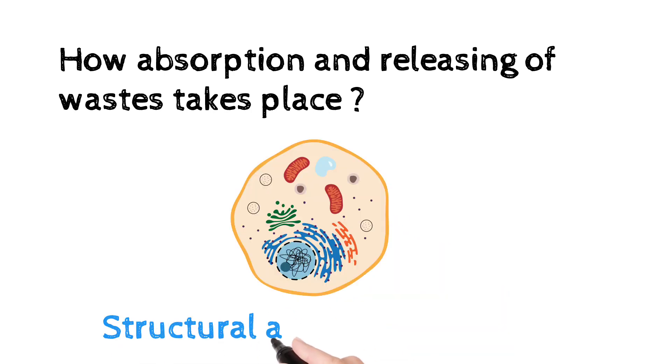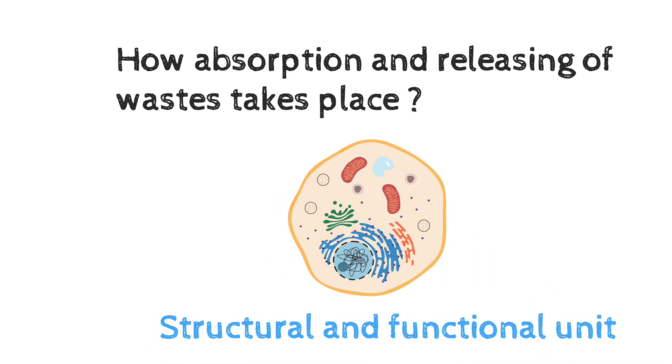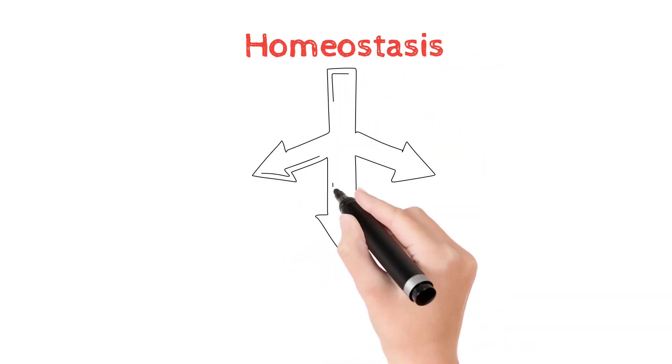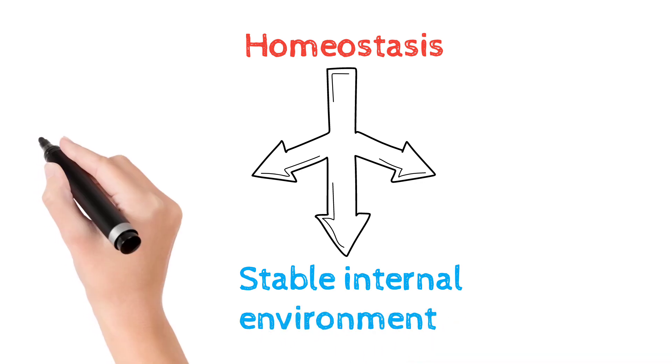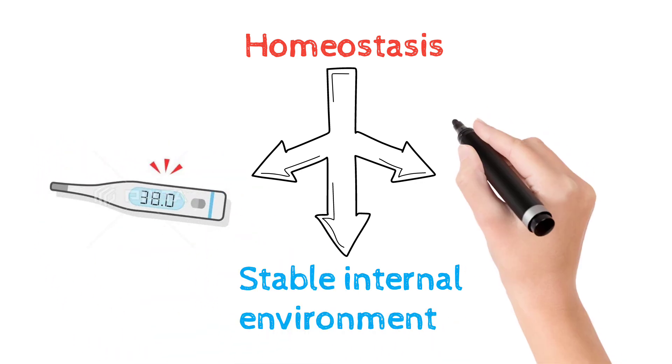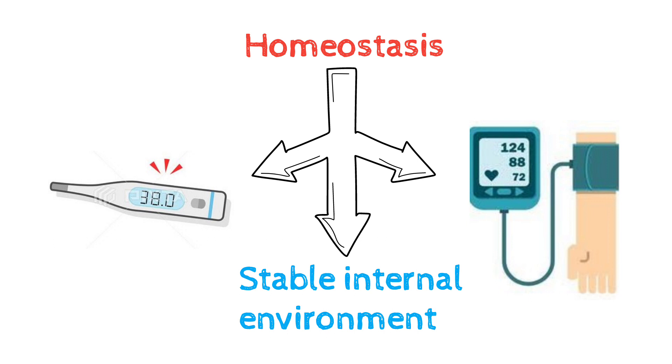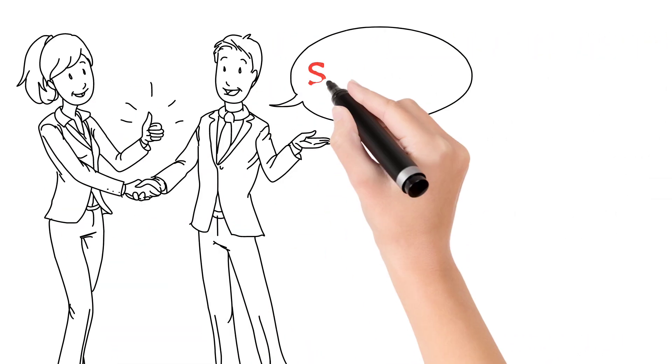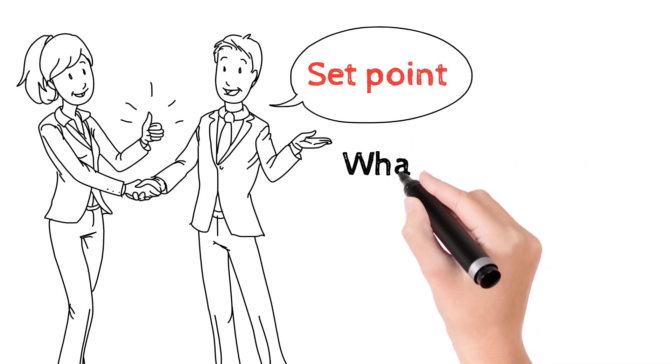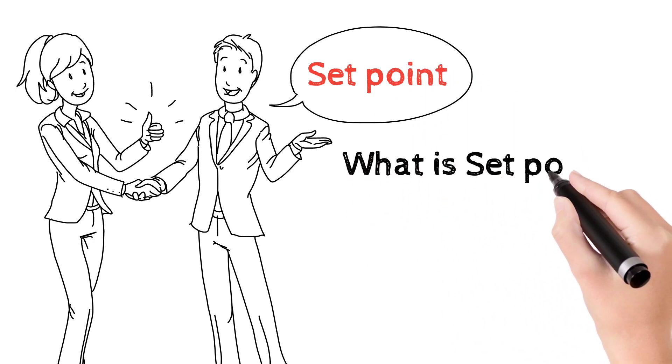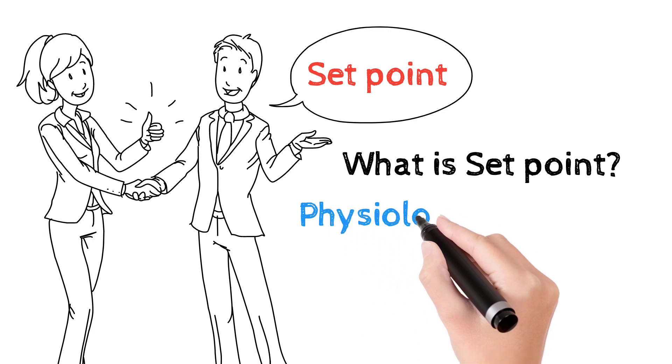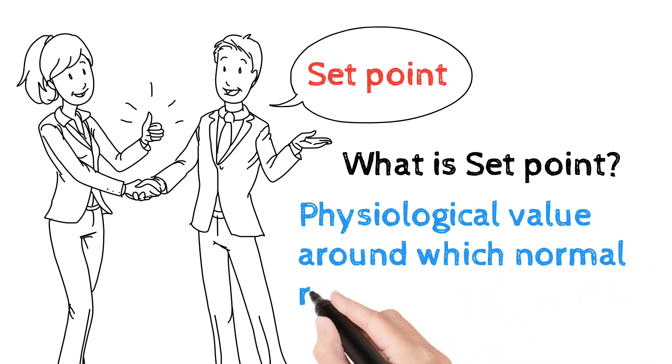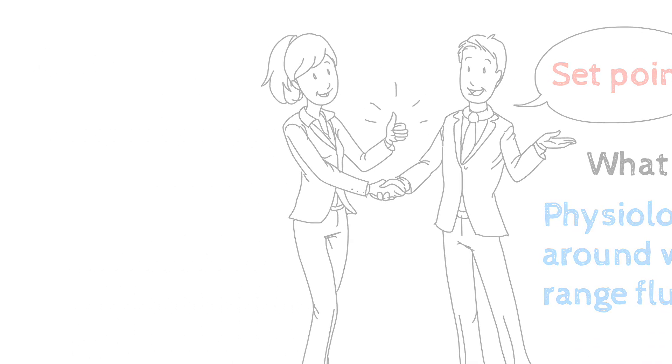We all know the cell is the structural and functional unit of the body. So homeostasis is maintaining the stable internal environment. For example, temperature or blood pressure. Homeostasis is a set point. What is a set point? It is a physiological value around which the normal range fluctuates.